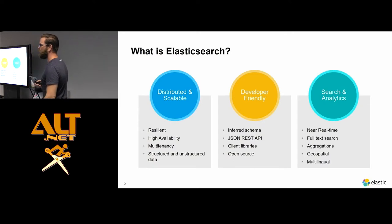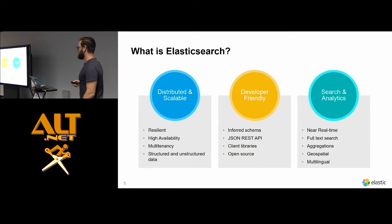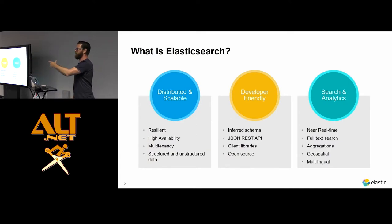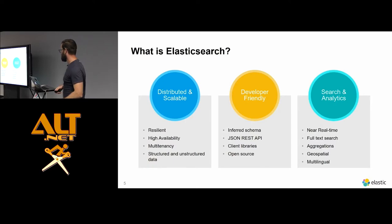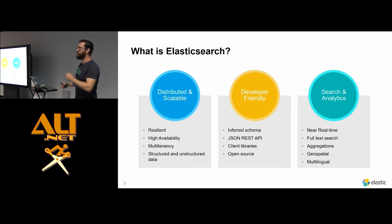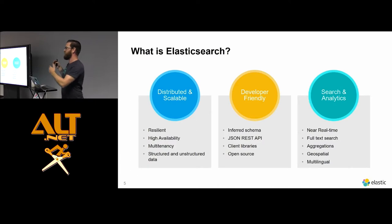Elasticsearch is currently on version 6.1.2, with 6.1.3 going out very shortly. You can work with structured and unstructured data - the only requirement is that your data is represented as a JSON document, with fields that can contain nested objects, strings, or any JSON primitives. It's very developer-friendly. People often talk about it as being schema-less, but I prefer to call it an inferred schema because there is actually a schema under the covers - you just don't need to define it upfront. The first document Elasticsearch sees will infer the schema.